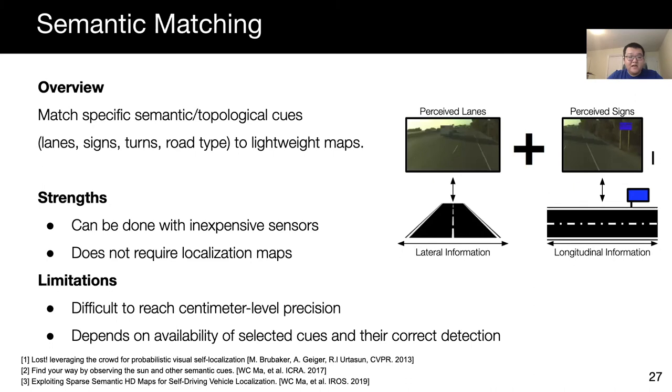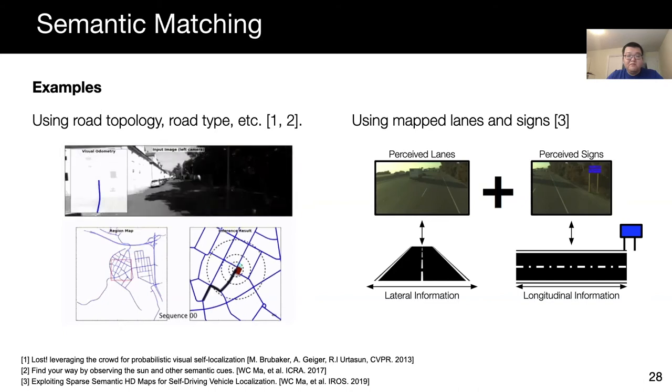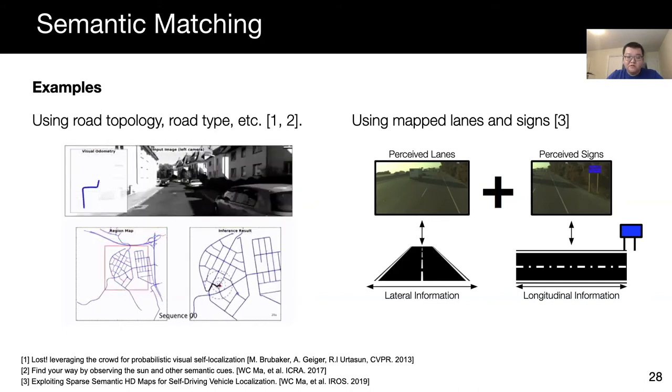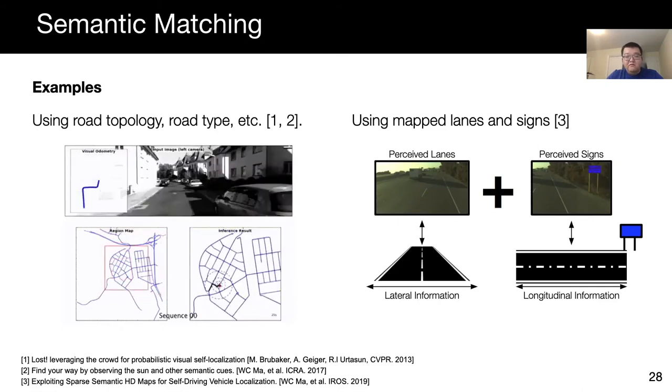Semantic localization leverages compact maps storing only semantic cues like lane markings, signs, traffic lights, and road types, all of which can be stored as vector maps, just like Google Maps we use in our daily lives. At runtime, the car must recognize these elements and match them against the vector maps to localize. However, due to the sparsity of the cues, these approaches can hardly achieve centimeter-level accuracy and struggle in areas without rich semantic cues. Examples of this approach include LOST, which relies on matching vehicle trajectory computed from odometry with road networks, and some recent work exploiting lanes and signs for localization on highways.